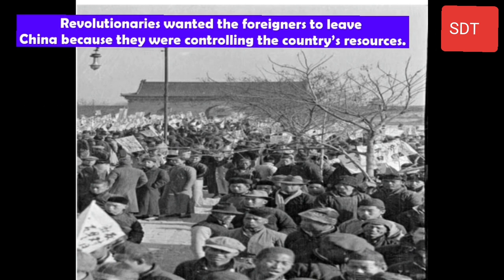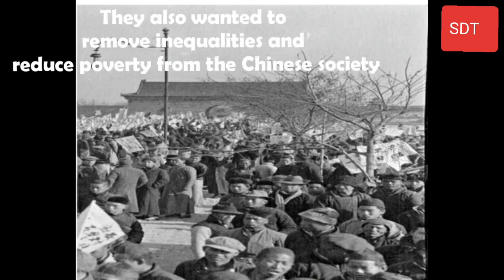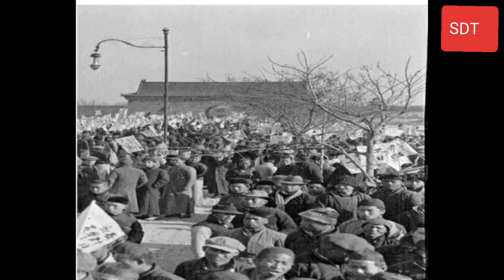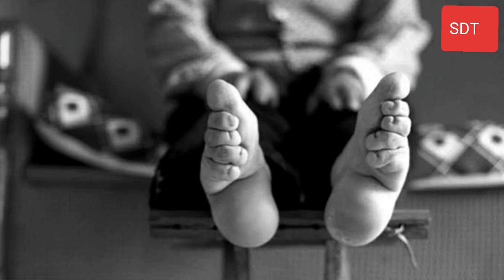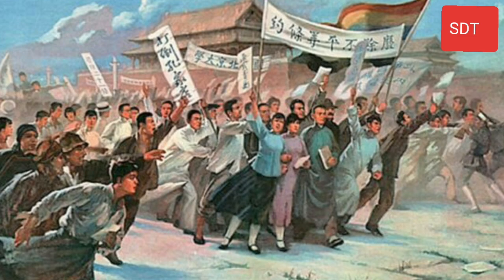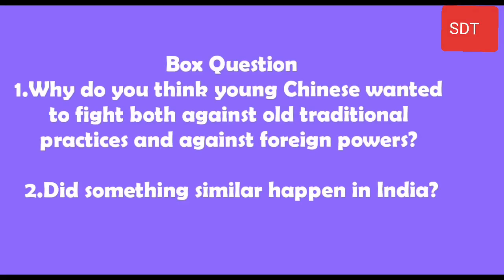Revolutionaries wanted the foreigners to leave China because they were controlling the country's resources. They also wanted to remove inequalities and reduce poverty. They advocated changes such as use of simple language and script, abolishing the subordination of women and the practice of foot binding — a cruel practice of not allowing women to have fully grown feet — and demanding equality in marriage and economic development. Why did young Chinese want to fight both against old traditional practices and against foreign powers? Did something similar happen in India?